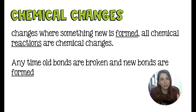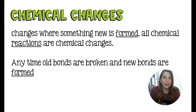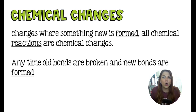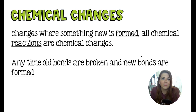The opposite of that is a chemical change. In a chemical change, you have an entirely new substance formed because you have bonds breaking, atoms rearranging, and new things forming. All chemical reactions are considered chemical changes. When we are big-time chemists, we talk about chemical reactions as opposed to chemical changes — it's really just the verbiage.